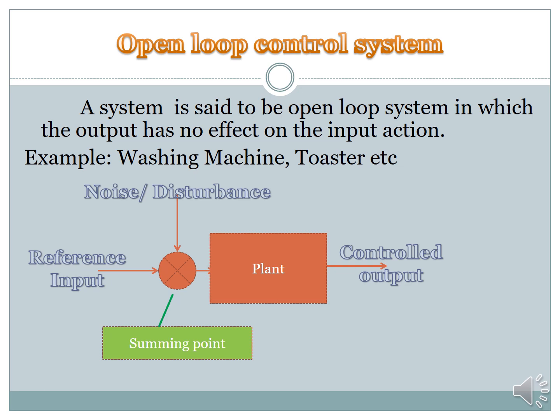A washing machine and a toaster are the best examples of an open loop system. The toaster's main purpose is that we set a timer — say two minutes, three minutes, or one minute — and the timer works automatically. After the set time, it automatically switches off. This process is not automatic in the sense that it does not check whether the toast is baked or not — it just runs for the set time. So this system is an open loop control. Similarly, the washing machine is based on a timer — if set to 40 minutes, it automatically switches off without checking the cleanliness of the clothes. This is an example of open loop control.